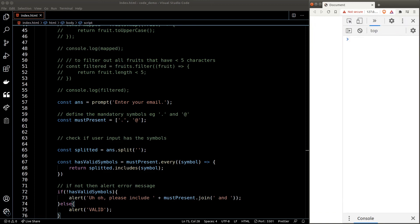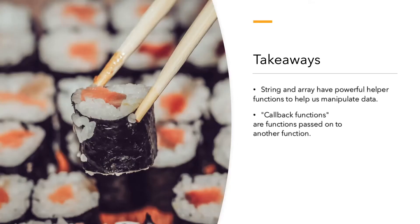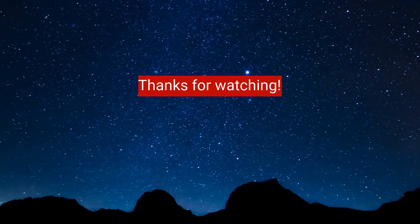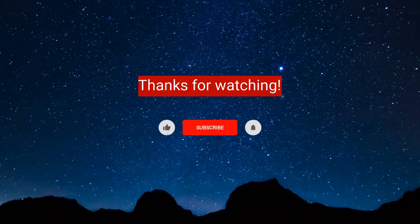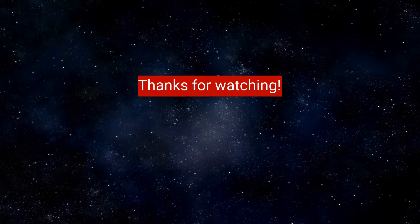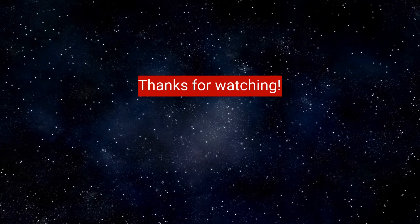It takes a while to wrap your head around these concepts, so re-watch the videos as necessary. Key takeaways for this lesson: strings and arrays have powerful helper functions to help us manipulate data. Callback functions are just functions passed into another function — for example, we pass callback functions to map() and filter() as their arguments. That's it for now — if you enjoyed this video, don't forget to hit like, subscribe, and the bell icon. Thanks for the support!